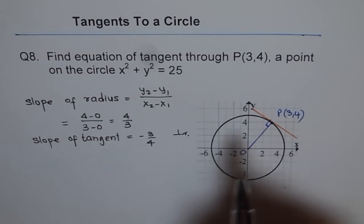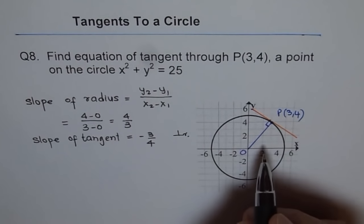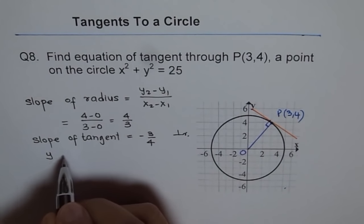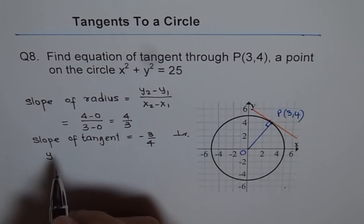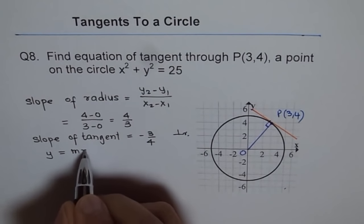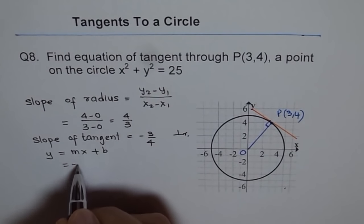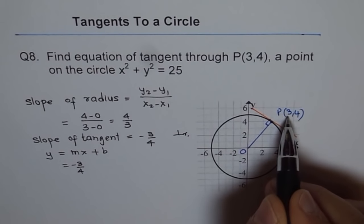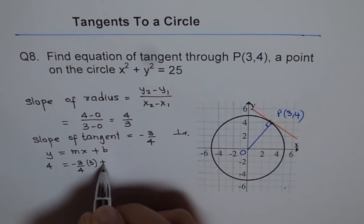Now we know the slope of the tangent and the point, so we can find the equation of the tangent. We will use the slope-intercept form: y = mx + b. Since we know the slope m = -3/4, and the point is (3, 4) where x = 3 and y = 4, we substitute: 4 = (-3/4)(3) + b.